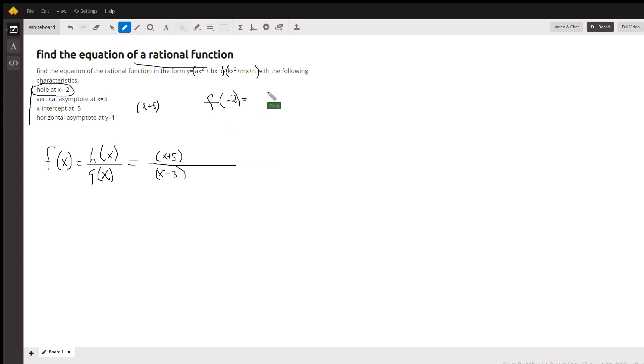Well, let's see, we'll have 3 in the numerator, negative 2 plus 5, and we'll have negative 5 in the denominator. So that means the hole is going to occur at the point negative 2, negative 3 fifths.